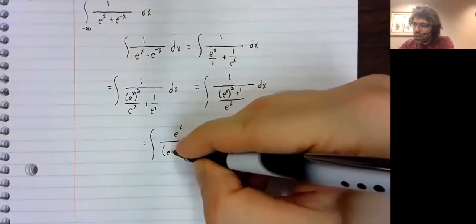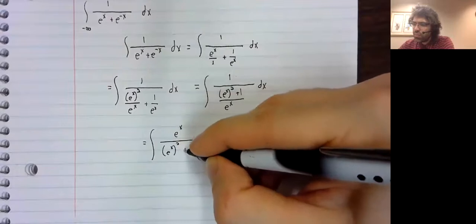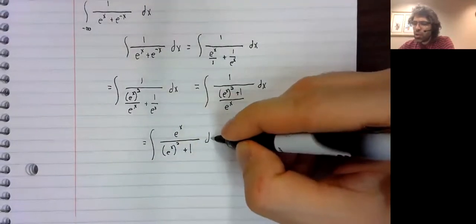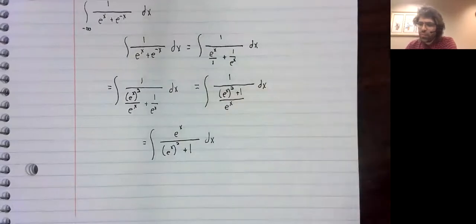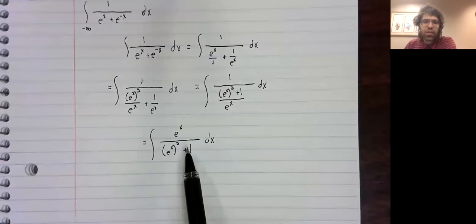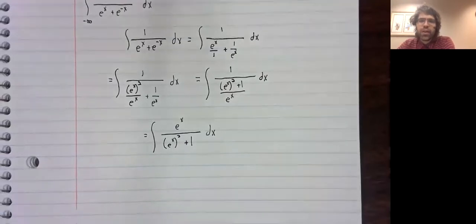And when we do that, something finally emerges. Something squared plus one looks familiar. This could be an arc tangent.